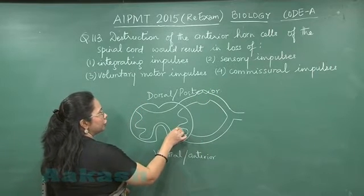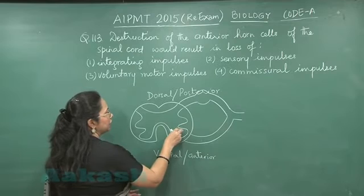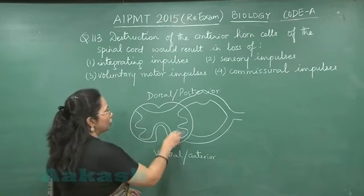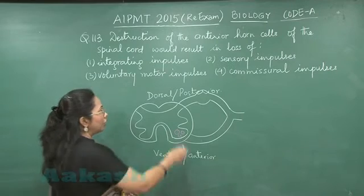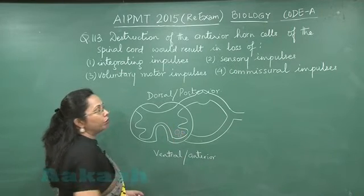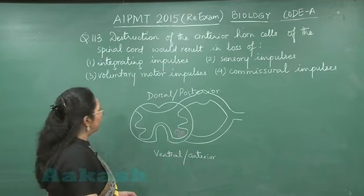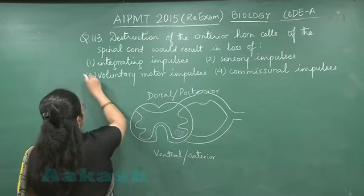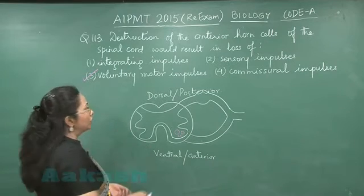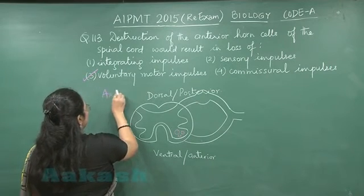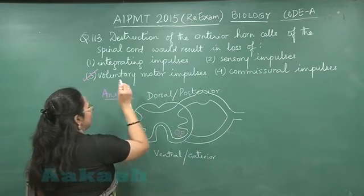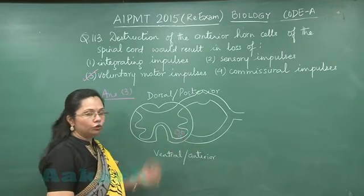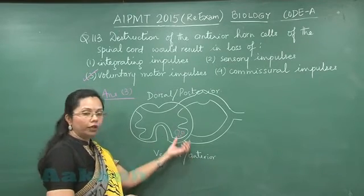If the ventral horn cells are damaged, that means the neurons here are damaged. These are motor neurons, so the motor impulses will not be effective. There would be loss of voluntary motor impulses. So our answer is option 3, which is because of damage to the ventral horn or the anterior horn.